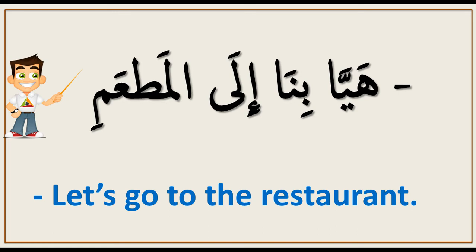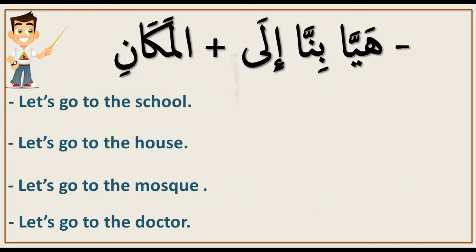As you can see from this example, 'Hayya bina ila' means 'let's go to.' And then you add 'al-makan' — 'al-makan' means 'the place.' So 'hayya bina ila' means 'let's go to,' and now we have more examples we want to translate to Arabic language.